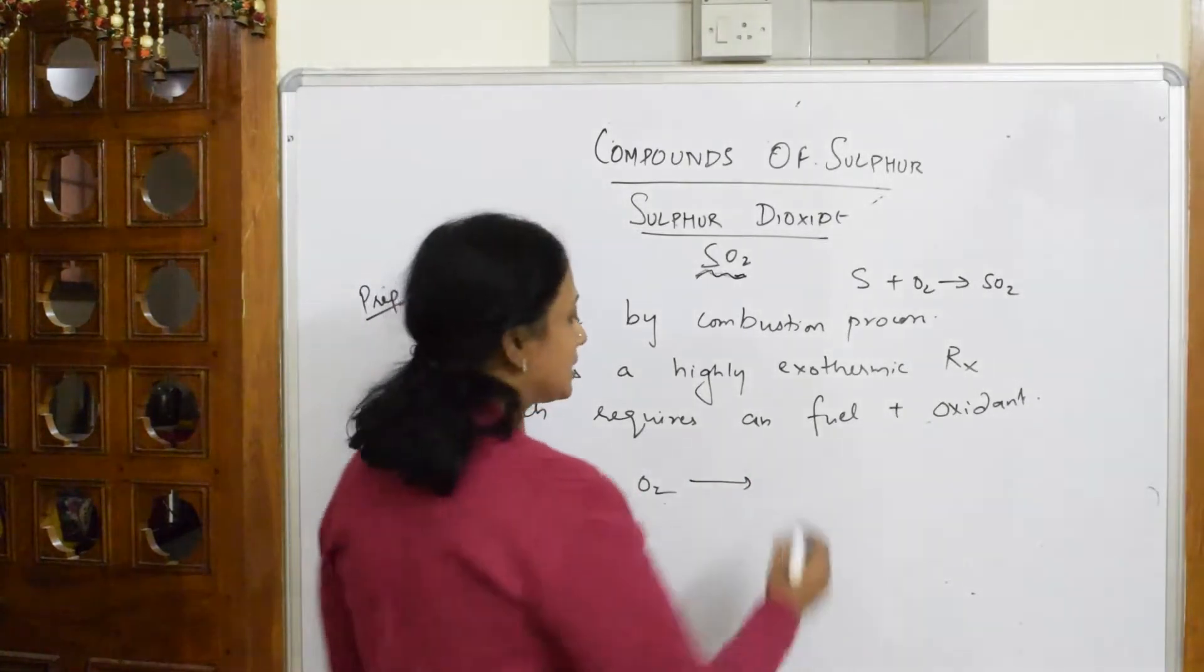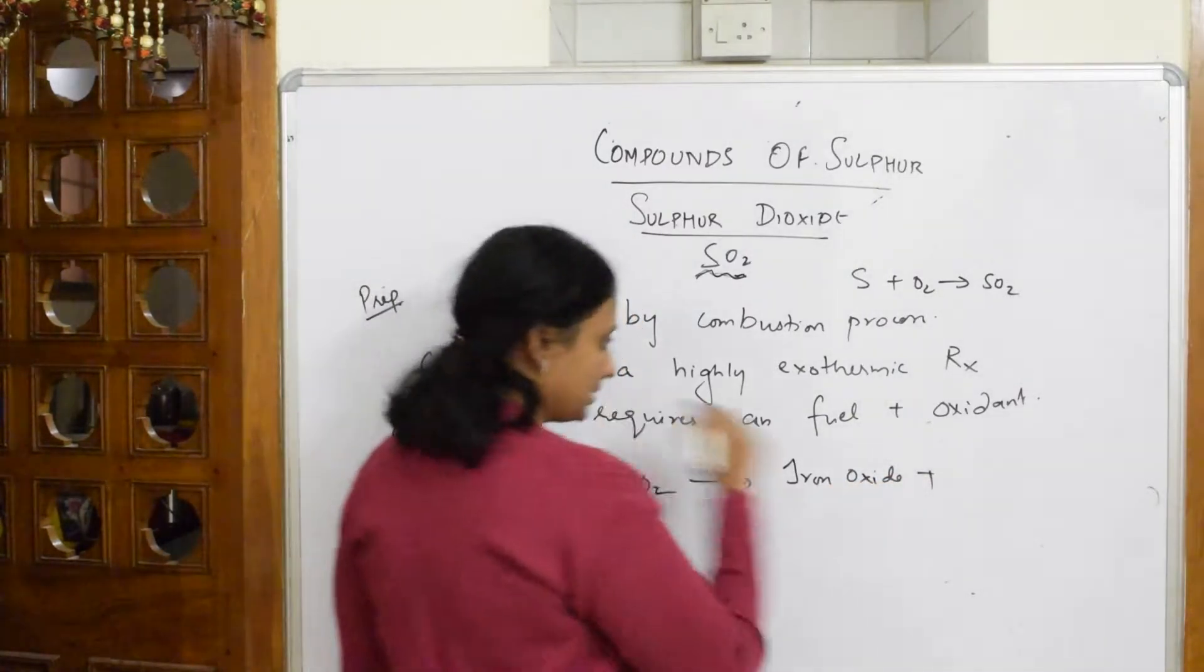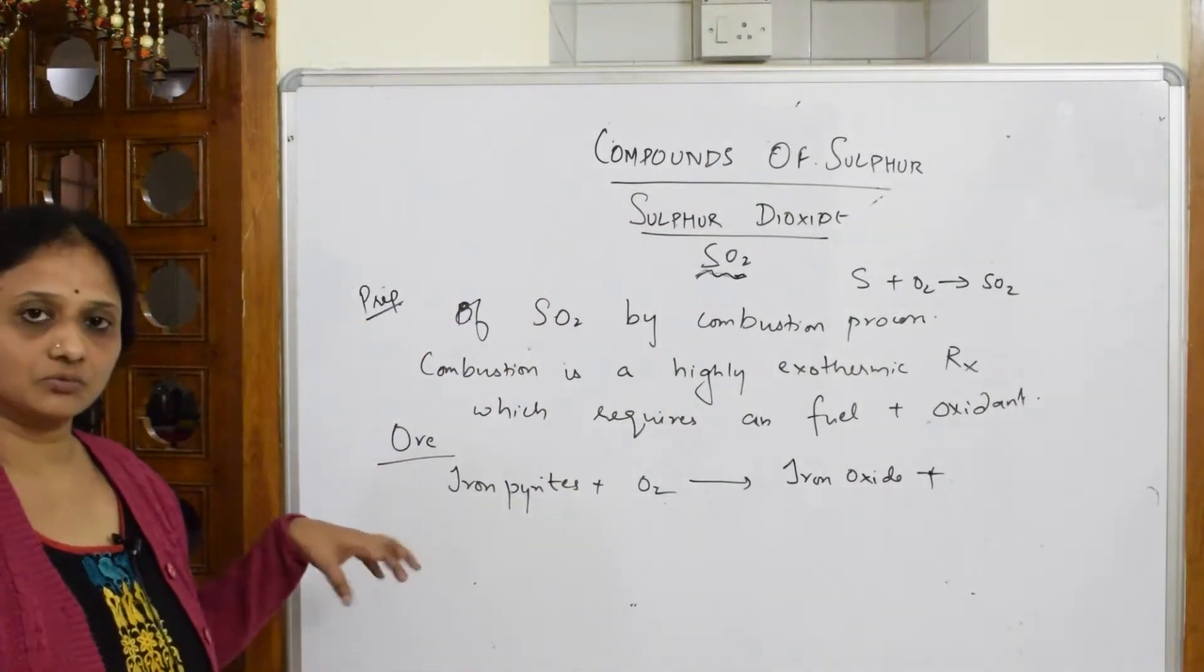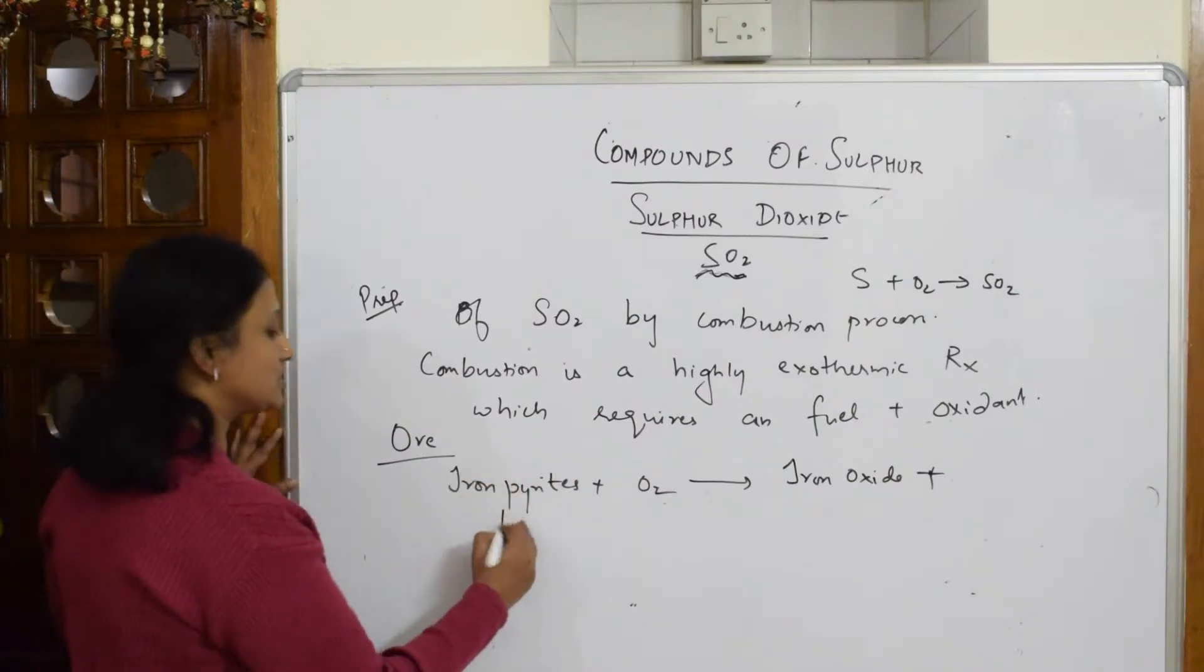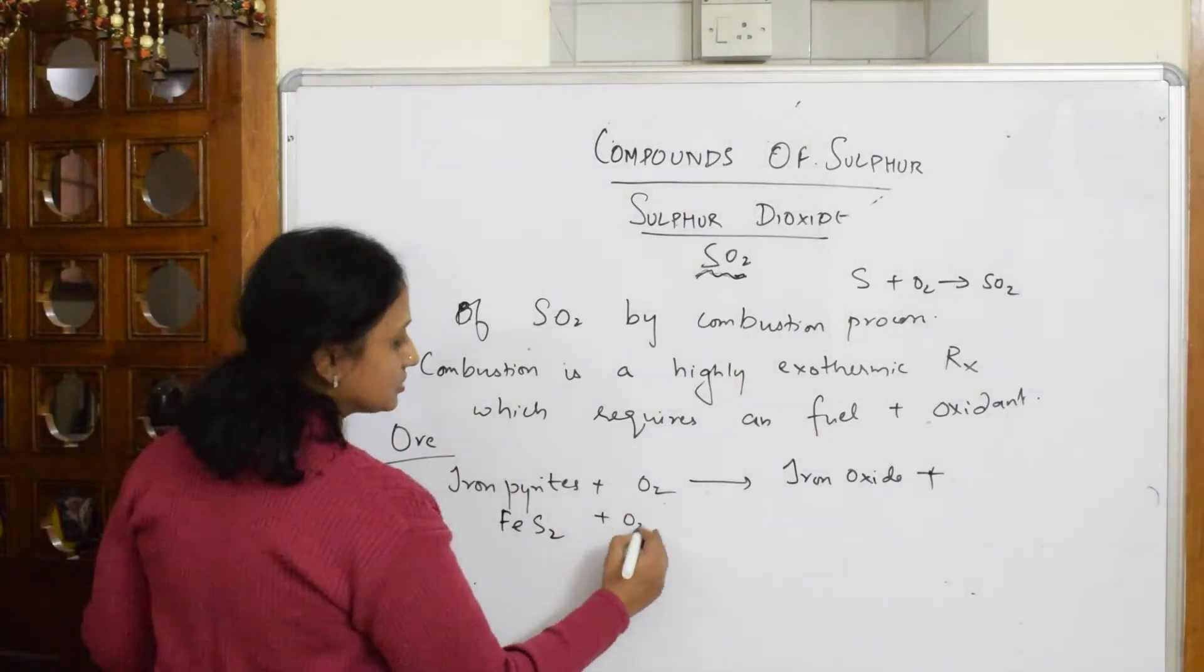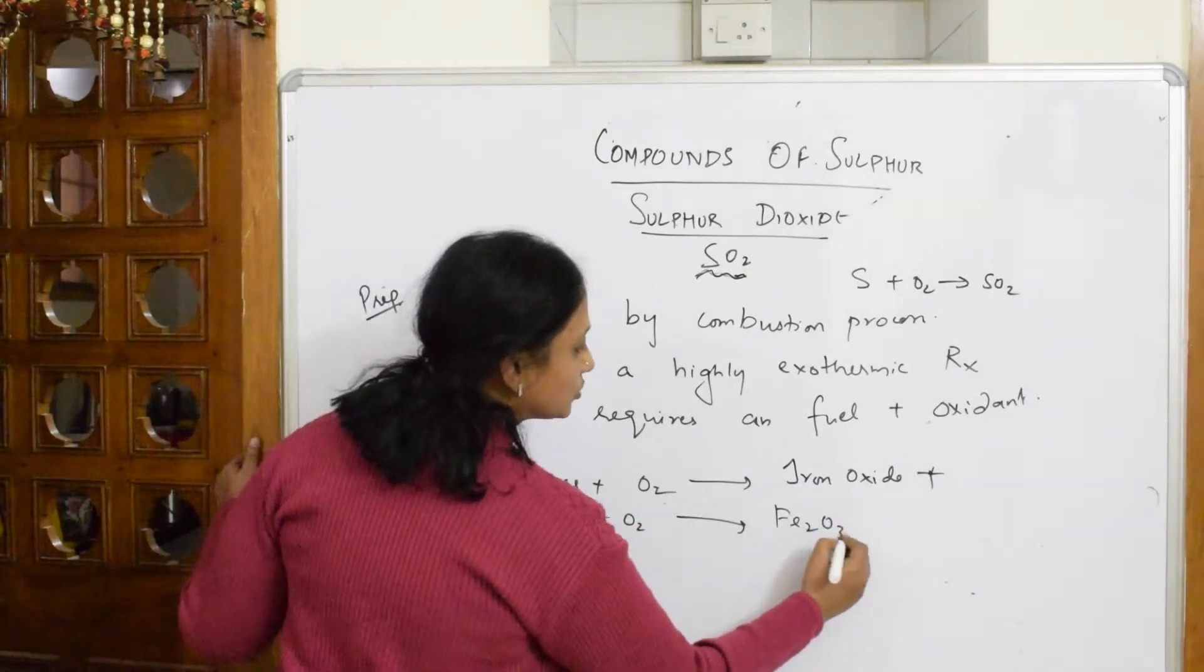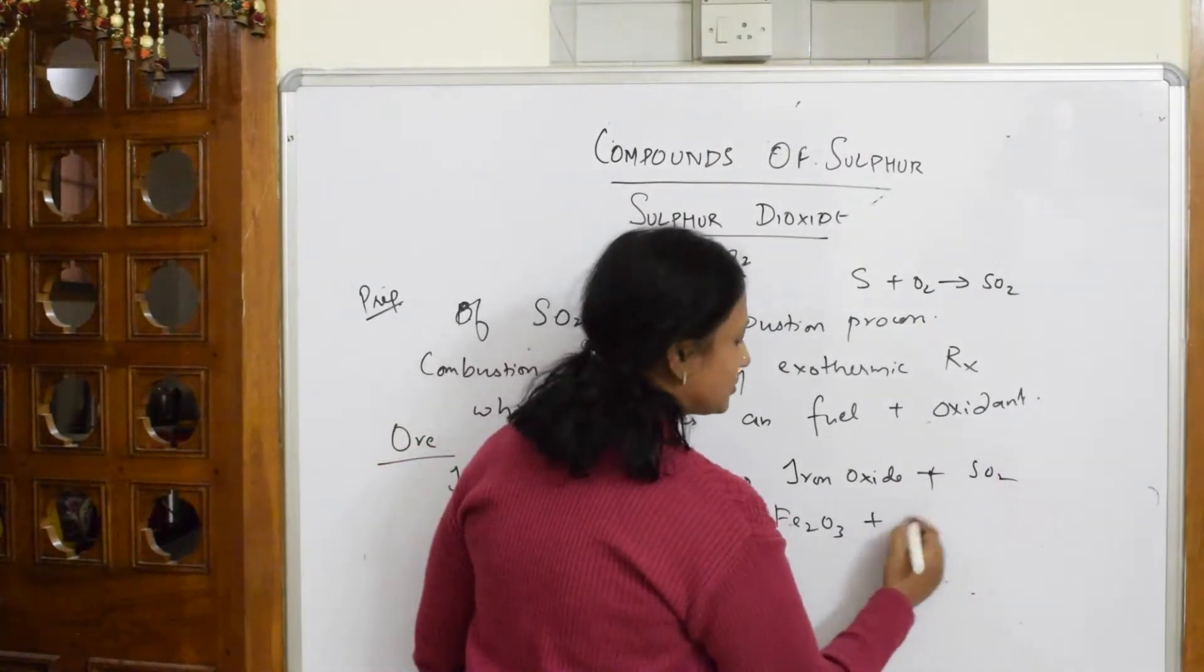To this combustion reaction when I add iron pyrites, we are going to get iron oxide. Let us write what this iron pyrite is: FeS2, and oxygen. So I'm going to get iron oxide, which is Fe2O3, and the leftover is sulfur dioxide. SO2.